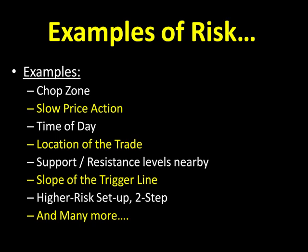Don't forget about the slope of the trigger line — a flat trigger line will always be another layer of risk. And the higher-risk two-step setup: if we take a two-step setup, that is another layer of risk because it's a counter-trend trade. When you add that two-step on top of a support and resistance level risk, on top of a slow price action layer of risk, then all of a sudden you get a very risky trade. There are lots more, so come out and join us tomorrow in our live trade room and ask me to go over the other layers of risk that we look for.